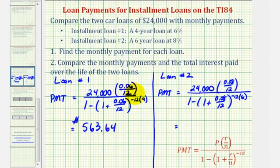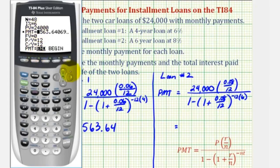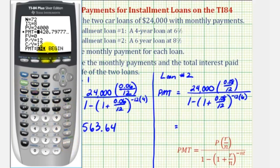If you do this by hand and round these values, you'll have a margin of error, so the monthly payment might be off by a few cents. For loan two, big N changes to seventy-two since it's a six-year loan — twelve times six — and the interest rate changes to eight percent. Everything else stays the same. Going down to payment, clearing it, and pressing alpha enter, the monthly payment for this loan over six years is $420.80.